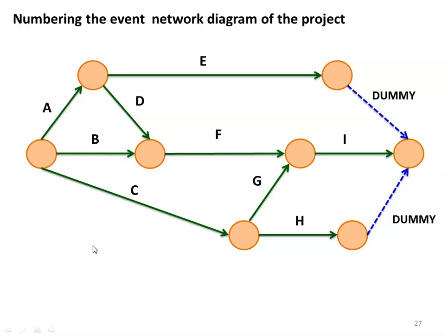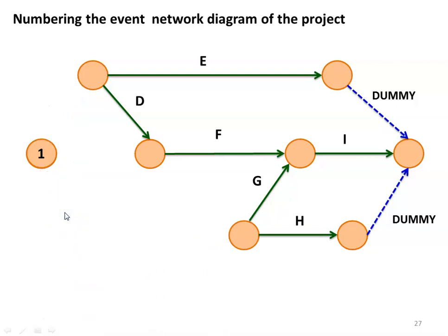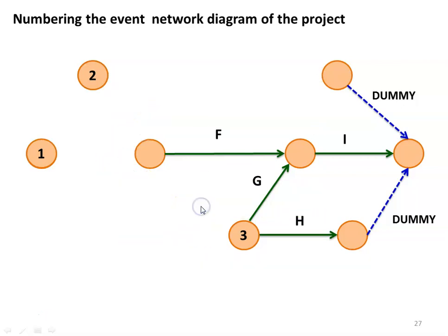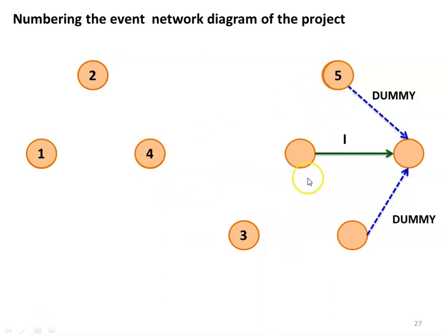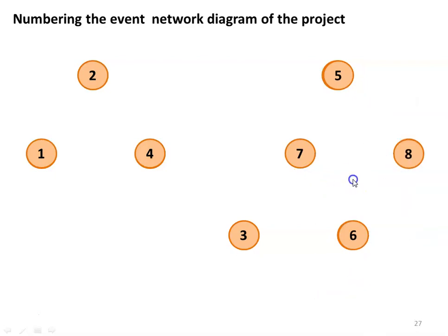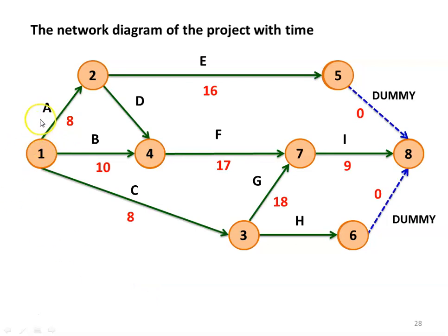Now we number all the events. The first event is taken as 1. Deleting activities emerging from the first event, this becomes event 2, this becomes event 3. Next we drop activities D and E; this becomes event 4 and this becomes event 5, then 6 and 7, and finally event 8. So there are 8 events in total. The activities A, B, C, D up to I have times: 8, 10, 8, 16, 17, 18, 9 days respectively, and the dummy activities consume 0 days.